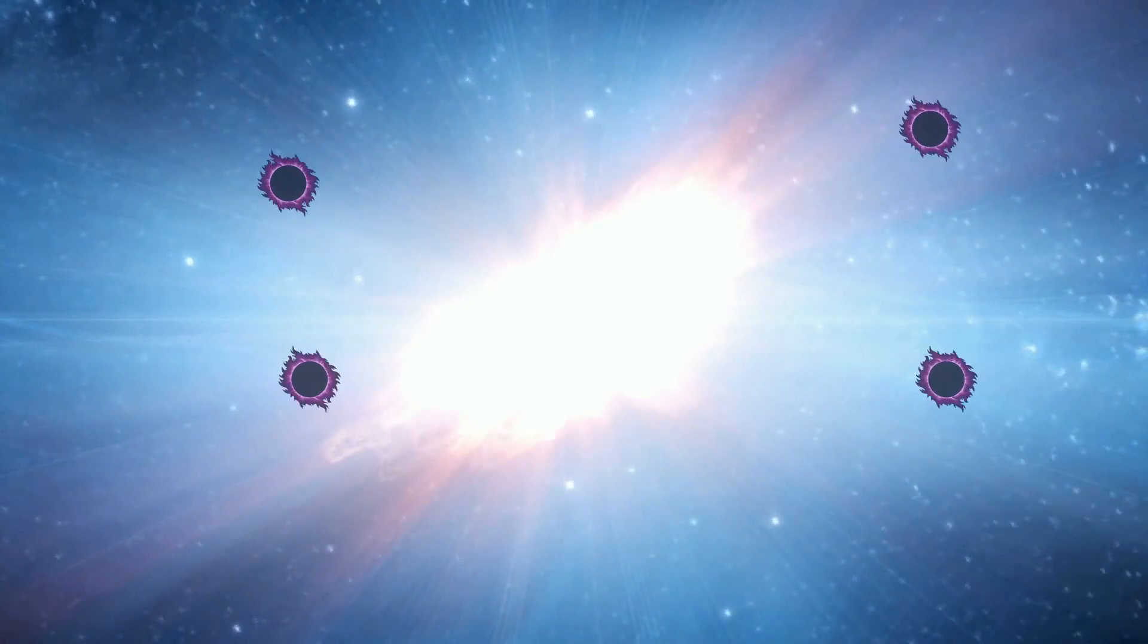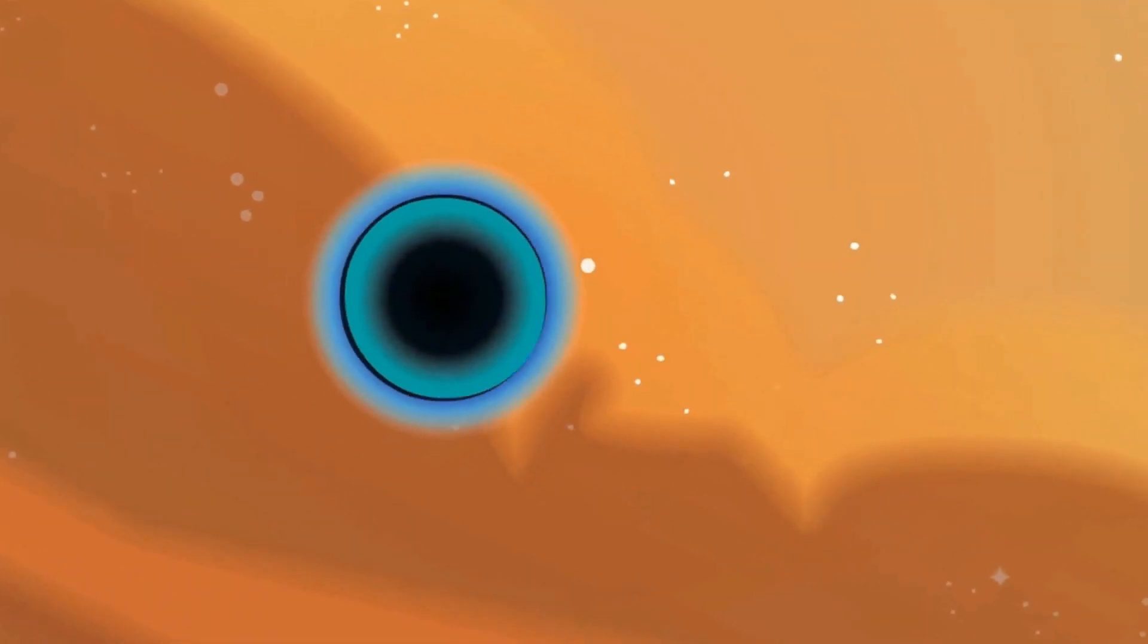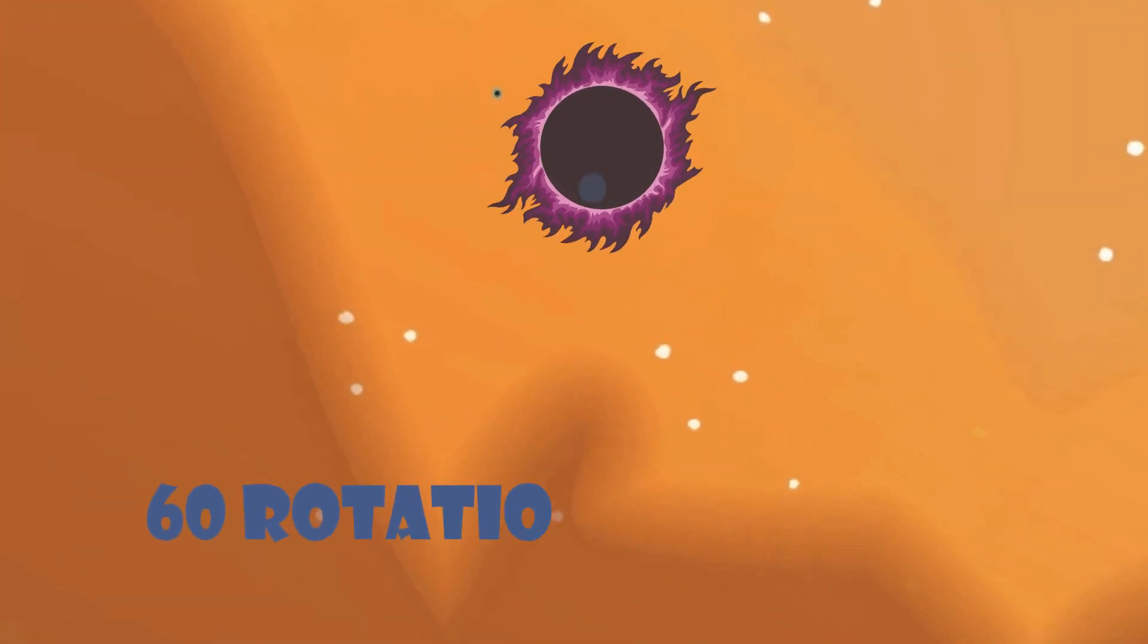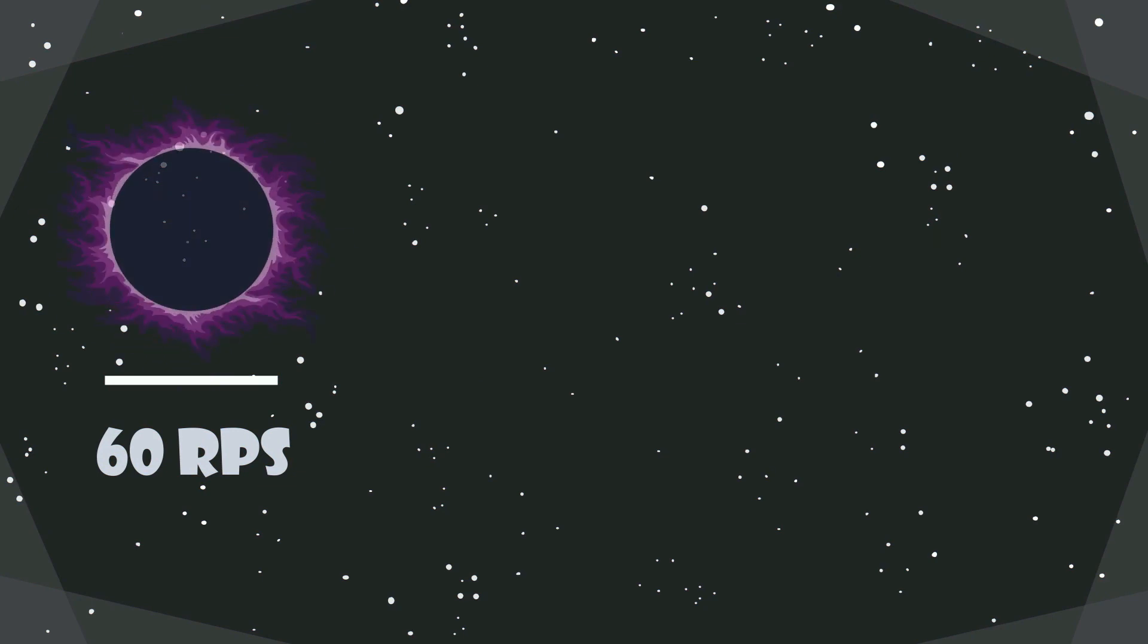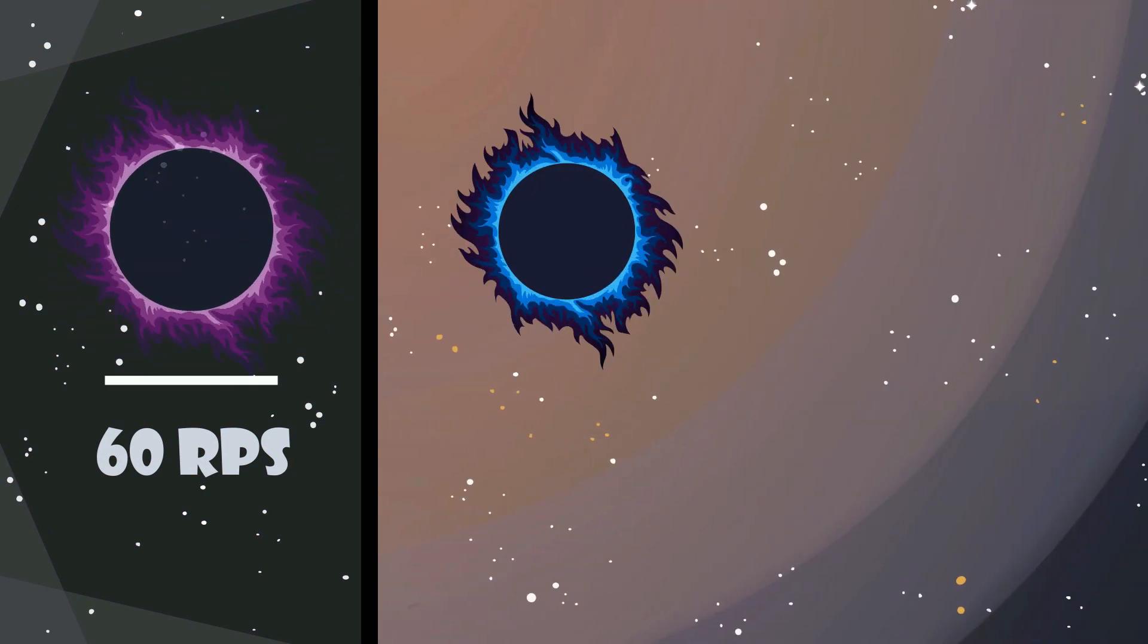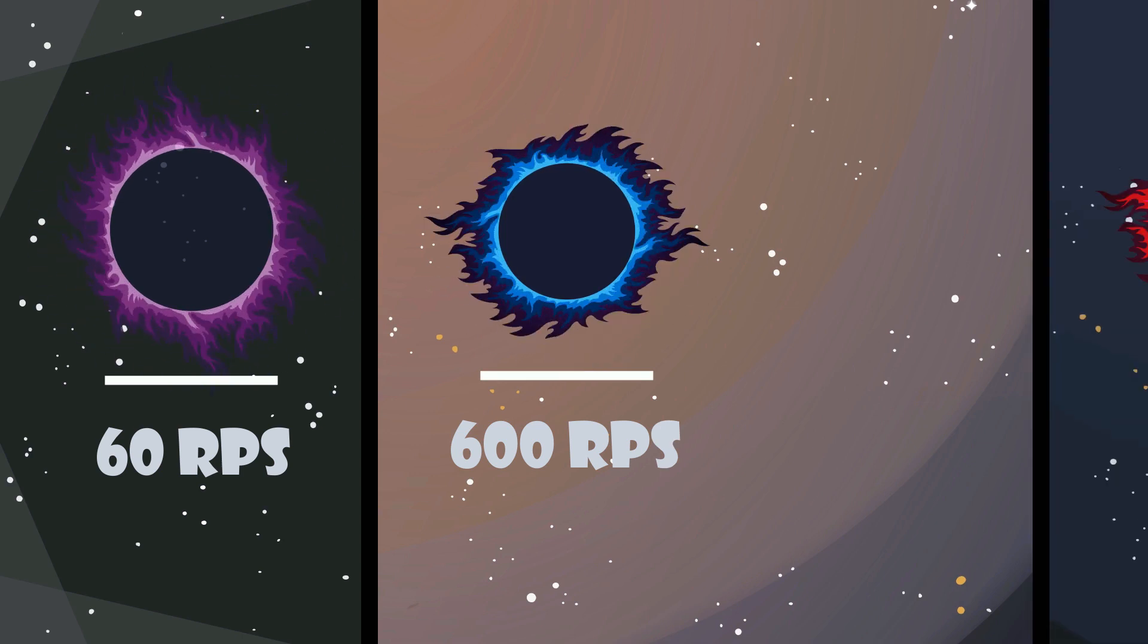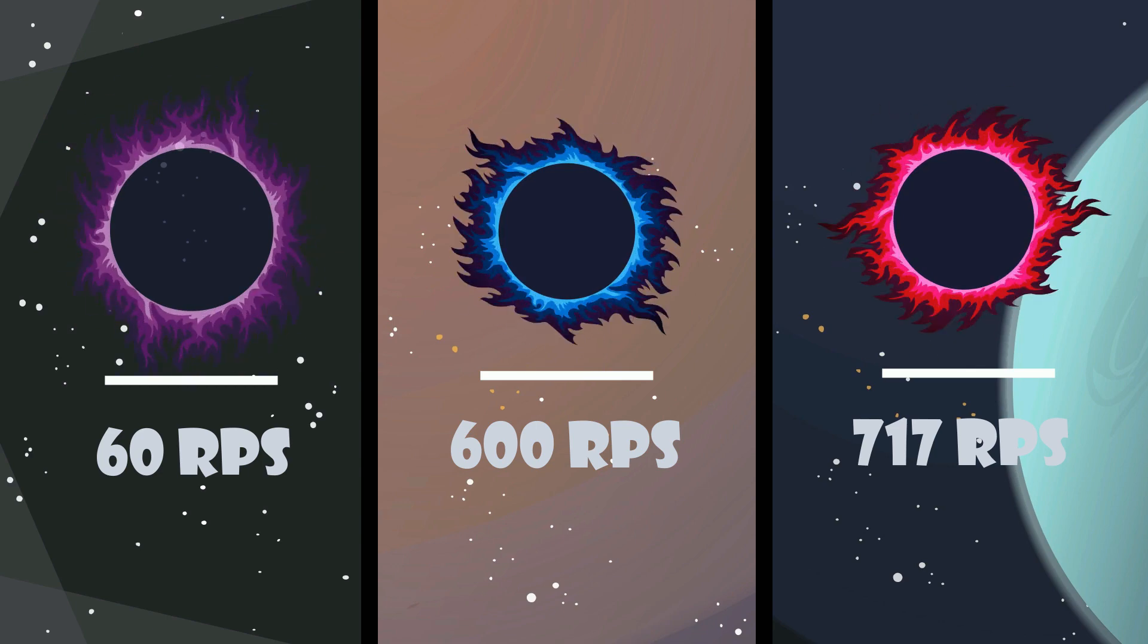If you ever heard of supernovas, you will know that some stars collapse in on themselves, and this energy causes their material to rotate at insane speeds. Neutron stars are born of these explosions and can spin at 60 rotations per second right after they are born. This is usual circumstances. Under some conditions, these rotations can reach up to 600. Actually, the fastest spinning neutron has a rate of 717 rotations per second.